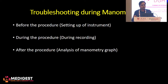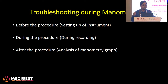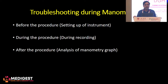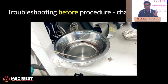Troubleshooting during manometry can be at essentially three steps. First and most important is before the procedure, where we are actually setting up the instrument to see whether it is working right. Second is during the procedure — during the recording of the graphs. Third is after the procedure, when you are analyzing the manometry graph. Troubleshooting is important and can be needed at multiple stages.